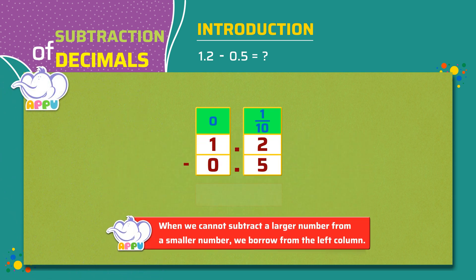Now we start subtracting the tenths column. Here we cannot subtract 5 from 2, so we borrow from the left column, which is the ones column. When we do this, 1 ones becomes 0 ones and we get 1 to the tenths column. So now we have 12. Now we can easily subtract 5 from 12, which is 7 in the tenths place.